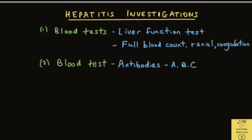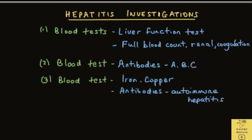There are also blood tests done to look at the actual genetic material of the viruses — hepatitis B and C — as well as certain components of the virus, which will be discussed in the videos on hepatitis B and C later. Blood tests are also done, if indicated, to measure levels of iron and copper, and to look for antibodies in autoimmune hepatitis.